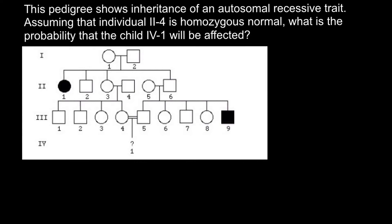Hello and welcome to Nikolai's Genetics Lessons. Today's problem: this pedigree shows the inheritance of an autosomal recessive trait, assuming that individual 2,4 is homozygous normal. What is the probability that child 4,1 will be affected?